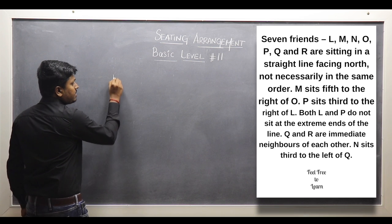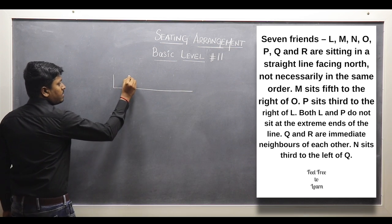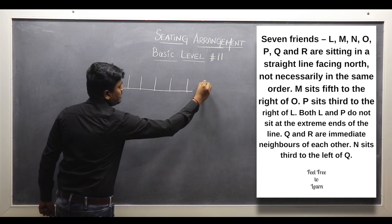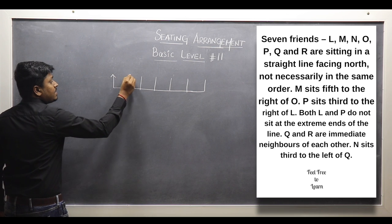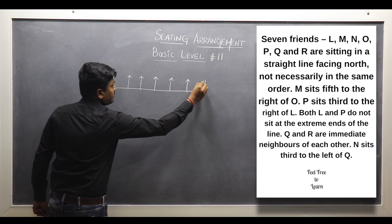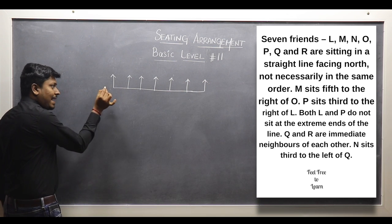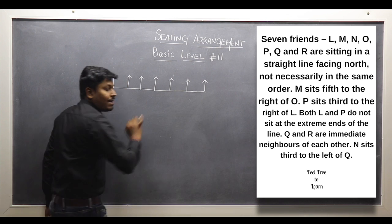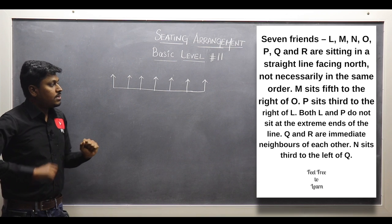Let me draw a diagram. So totally there are 7 persons: 1, 2, 3, 4, 5, 6 and 7. All 7 persons are facing north in this direction. Remember that this will be the left hand side — that is extreme left — and this will be extreme right hand side. So this will be left hand side and that will be right hand side.